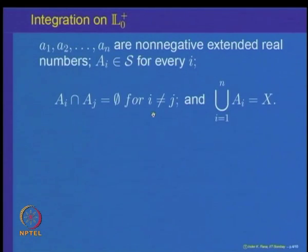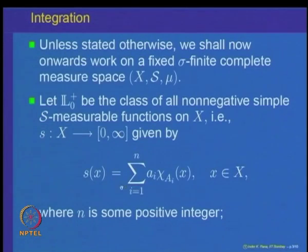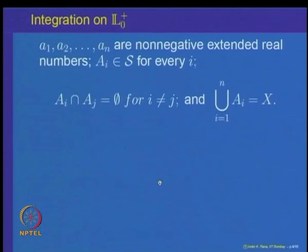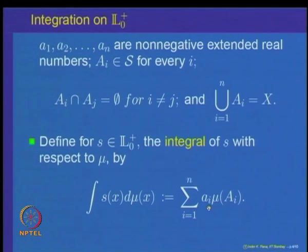For such functions in this class, we are going to define the notion of integral. For a function s in this class, if its representation is s(x) = sigma a_i chi_{A_i}, then its integral is defined as the integral of s d mu equal to summation of a_i times mu(A_i), that is the value of the function on the set A_i times the measure of the set A_i.